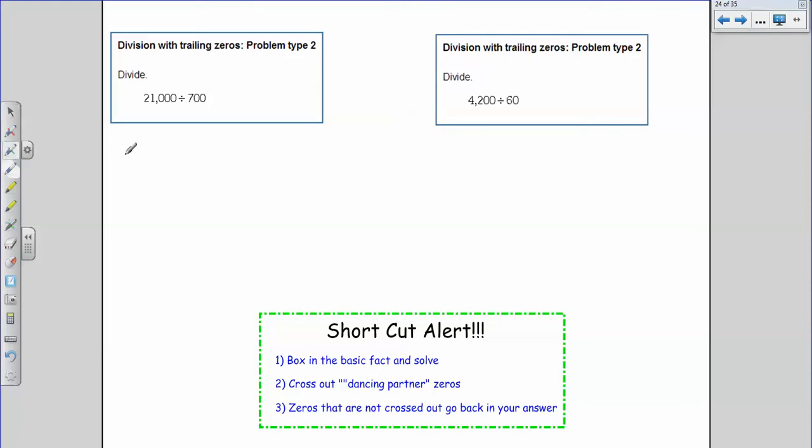So we're going to start out the same way though. I'm going to write in my problem. I have 21,000 divided by 700. So let's look at our alert down here.